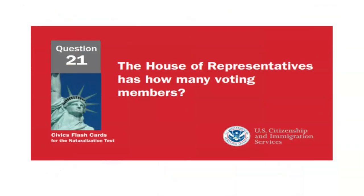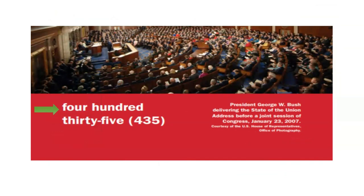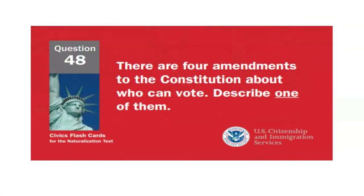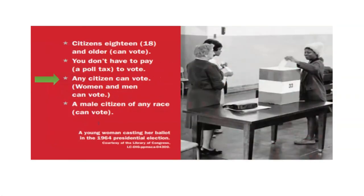The House of Representatives has how many voting members? 435. There are four amendments to the Constitution about who can vote. Describe one of them. Any citizen can vote.